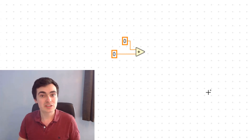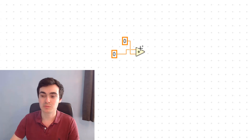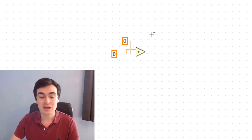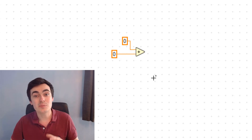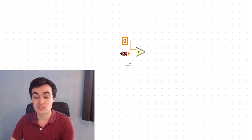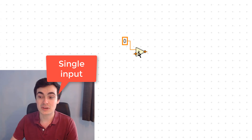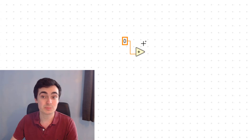Did you know that in previous versions of LabVIEW you've been able to click Control and swap the inputs of functions? However, up until 2020 we weren't able to do that with just a single function, but now in 2020 we can swap the values with a single item.